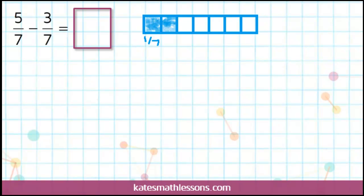This means that 5 7ths minus 3 7ths is 2 7ths. I had 5 out of 7 pieces, and I took away 3 of those pieces. So I'm left with 2 out of 7, 2 7ths.